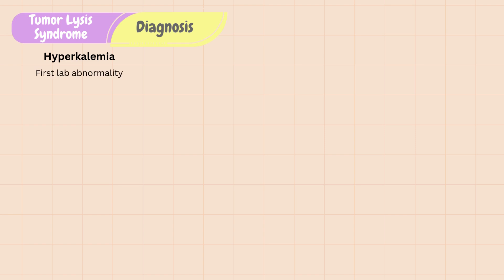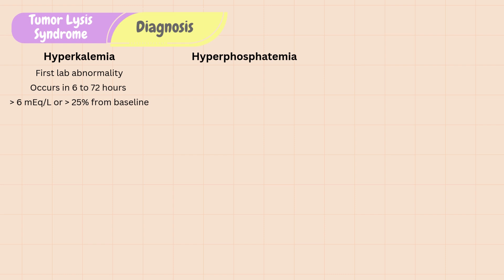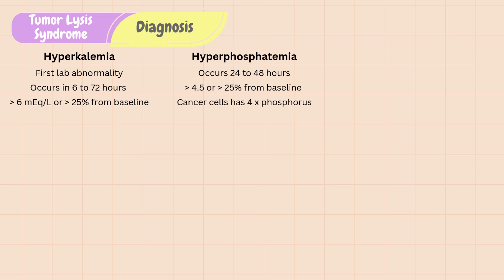TLS is mostly diagnosed with labs. Hyperkalemia is often the first lab abnormality, occurring 6 to 72 hours after initiation of chemotherapy. It is defined as a potassium level of more than 6 or more than 25% increase from baseline. Hyperphosphatemia, or elevated phosphorus in the blood, occurs 24 to 48 hours after chemo, defined as a phosphorus level of more than 4.5 or more than 25% increase from baseline for adults. It is interesting to note that cancer cells contain four times the amount of phosphorus than normal cells.